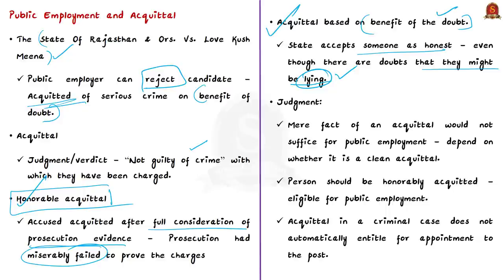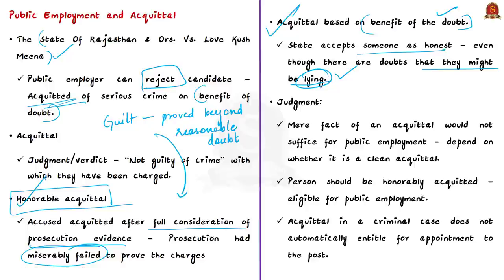In the Indian legal system, the provision regarding burden of proof is laid in the Indian Evidence Act of 1872. The rule is that whoever alleges a fact must prove it — in a criminal trial, the prosecution alleges the offense, so the burden of proof lies upon the prosecution. That is why we say prosecution had miserably failed to prove the charges.